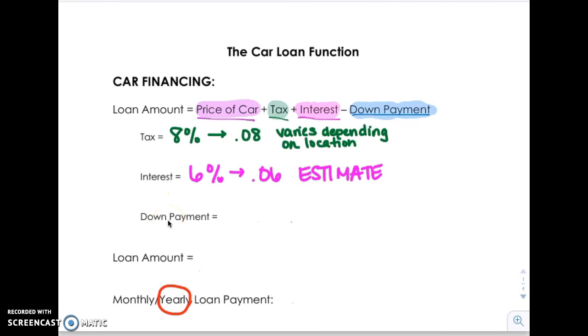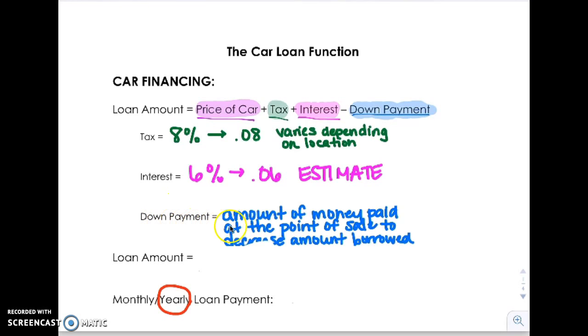And then of course you may make a down payment, you may not. A down payment is the amount of money paid at the point of sale to decrease the amount that you borrow. Banks used to force you to make a down payment because you were a lower risk because you would owe less on the loan. But now if you watch commercials for cars, they always say no money down, zero out of pocket, but we recommend that you do make a down payment and you'll see why as we go forward.